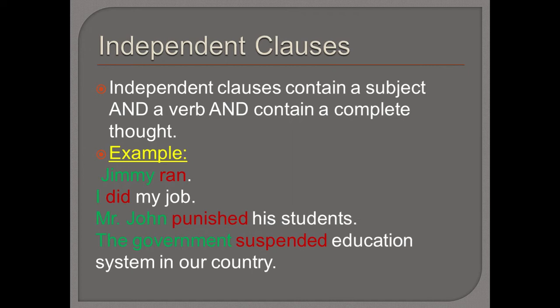'Mr. John punished his students' — Mr. John is the subject, 'punished' is the verb, and we know who he punished. 'The government suspended the education system in our country' — 'the government' is the subject, 'suspended' is the verb. So we have a complete thought and a complete idea. A sentence giving a complete thought can be two words or even, in rare cases, one word.